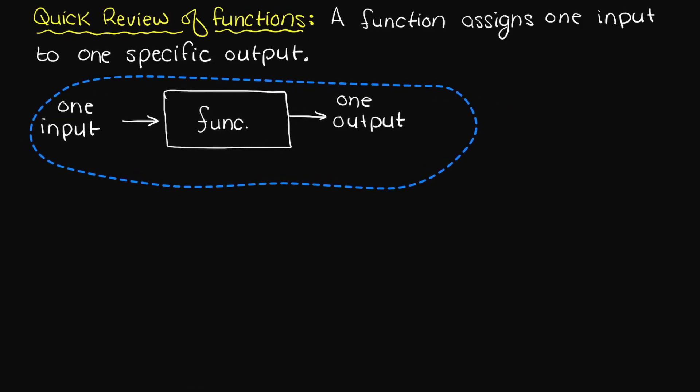This is best seen on a graph using the vertical line test. If there are more than just one output for any given input then we no longer have a function. So, now that we have reviewed functions, what is a composite function?